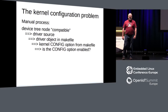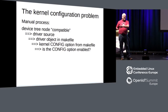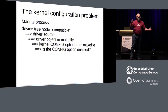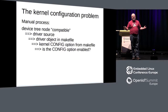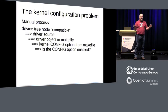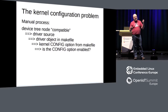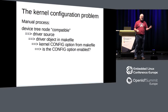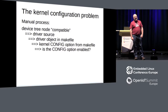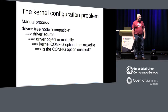Here's what DT2Config is trying to deal with. There's a manual process where you have a device tree describing devices, and you want to generate a kernel that can handle those devices — you need the right driver. The manual process: you look in the device tree, for each device there's a magic string called a 'compatible', that compatible somehow matched up with a driver file, then you look in the makefile for the kernel config option needed to enable that driver, then check your kernel configuration.